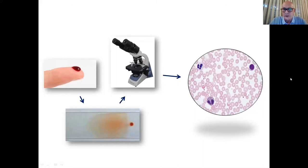Relembrando alguns conceitos: se a gente pegar um pouquinho de sangue e colocar em uma lâmina de microscópio, conseguimos observar logo de cara a diferença entre células mais avermelhadas e células mais esbranquiçadas — os eritrócitos, glóbulos vermelhos e os glóbulos brancos.